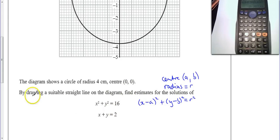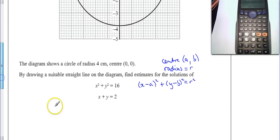Well, we want to plot x plus y equals 2 on our graph. So let's rearrange this. So y equals minus x plus 2. That for me is a gradient of minus 1, and a y-intercept of 2.